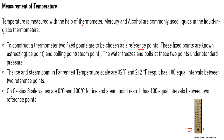Water freezes and boils at these two temperatures under standard pressure. On the Fahrenheit scale, the ice and steam points are 32°F and 212°F — a difference of 180 equal intervals. On the Celsius scale, the ice point is 0° and steam point is 100°, giving 100 equal intervals between the two reference points.